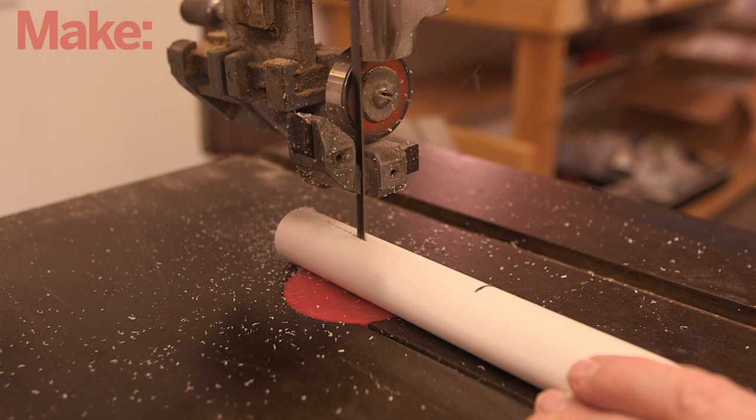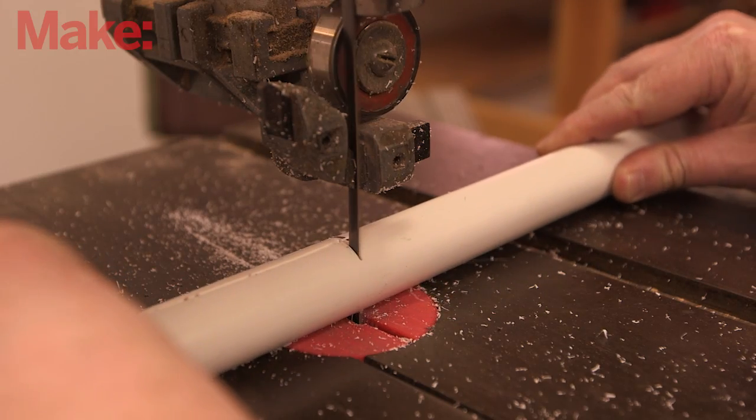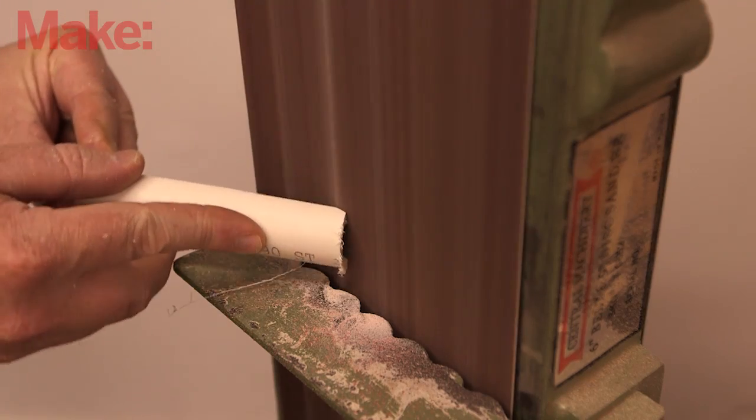First, cut a 1 inch PVC pipe in half lengthwise to a 4 inch segment. If you have some time on your hands, feel free to sand down the edges a little.